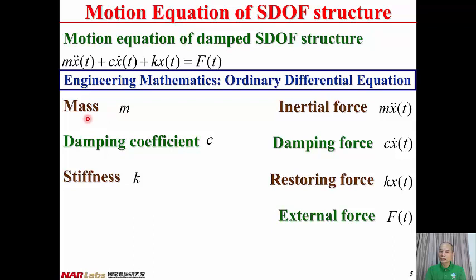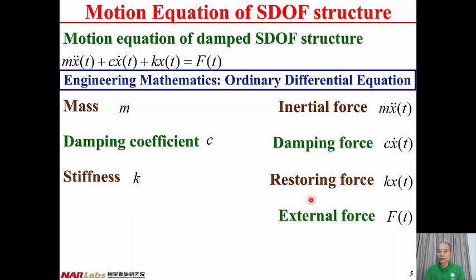M is the mass of the structure. C is the damping coefficient. K is the stiffness. The inertial force is induced by the acceleration of the structure, corresponding to M x-double-dot. The damping force is induced by the velocity, corresponding to C x-dot. The restoring force is induced by the displacement, corresponding to Kx. Ft is the external force applied to the structure.